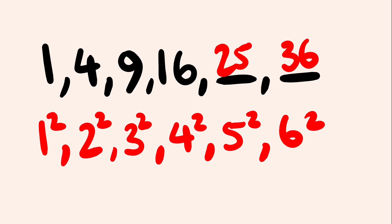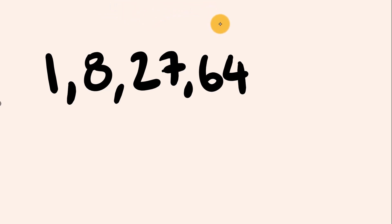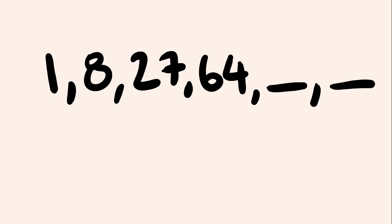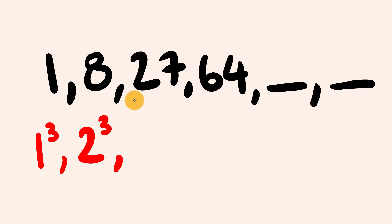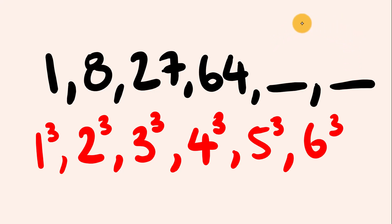This is another type of sequence to watch out for — where we have exponents. Here's another example: 1, 8, 27, 64. This time we're dealing with cubed numbers. 1 is 1 cubed (1×1×1), 8 is 2 cubed, 27 is 3 cubed, and 64 is 4 cubed. So the next value is 5 cubed and the value after is 6 cubed. 5 cubed is 125, and 6 cubed is 216.